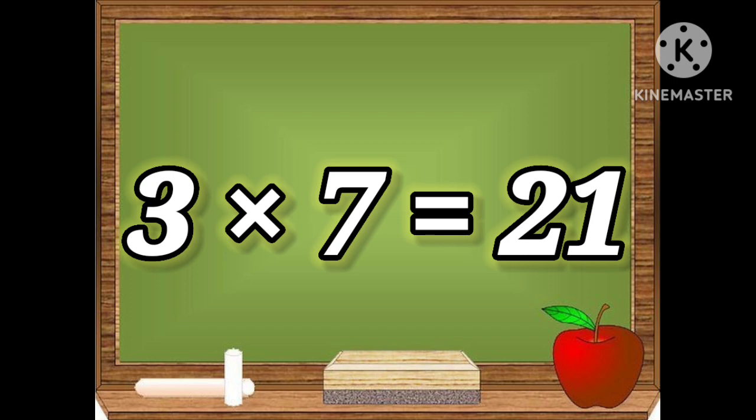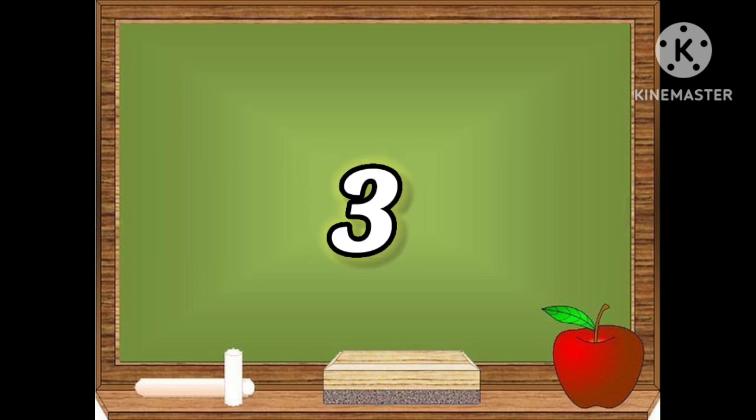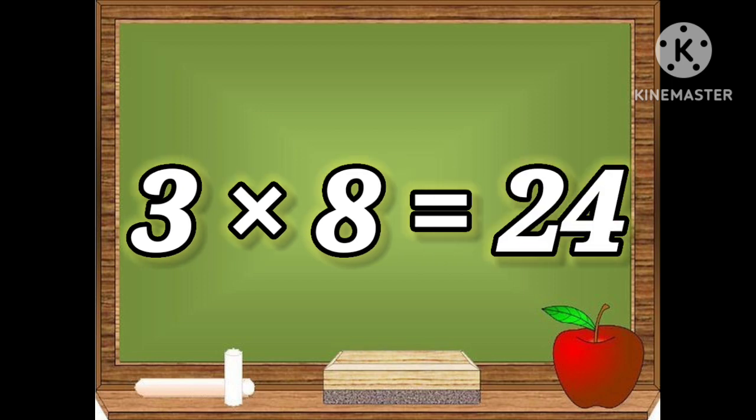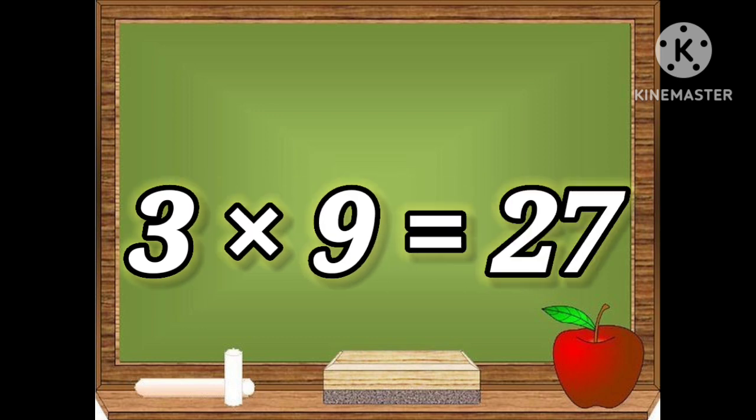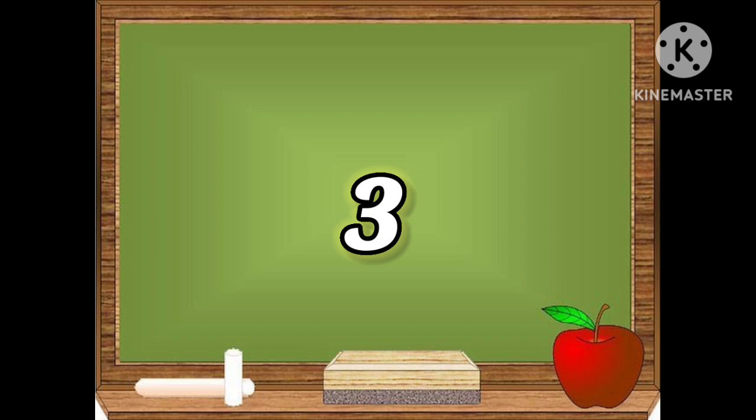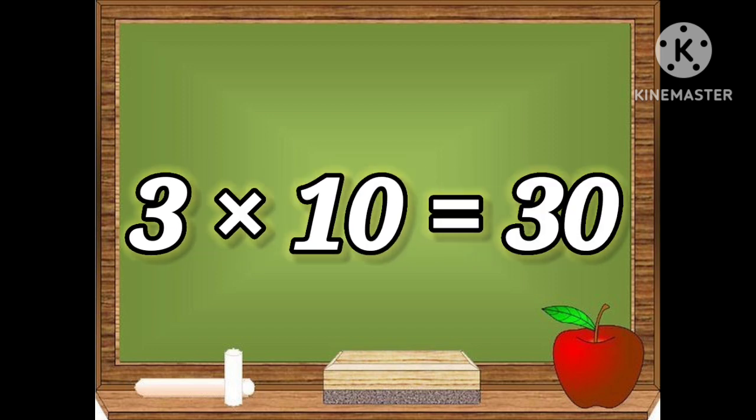Three eights are twenty-four. Three nines are twenty-seven. Three tens are thirty.